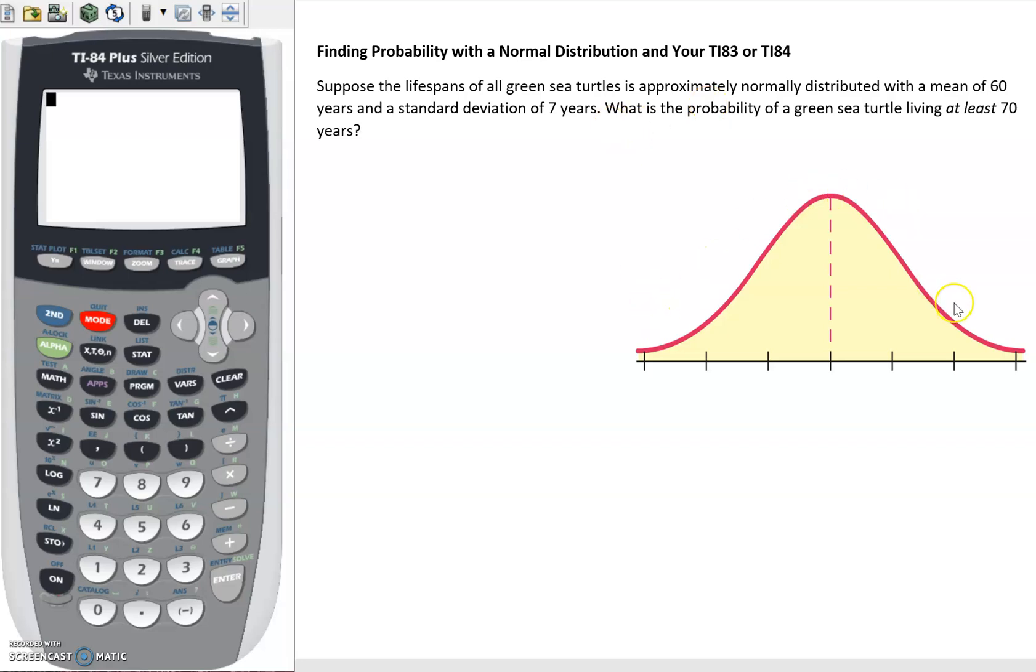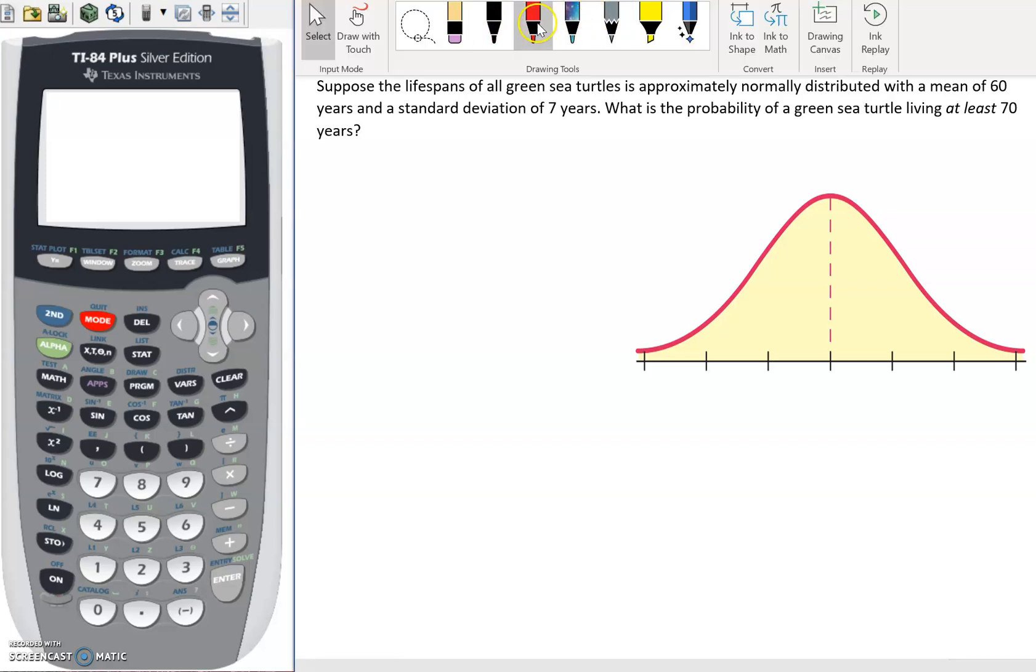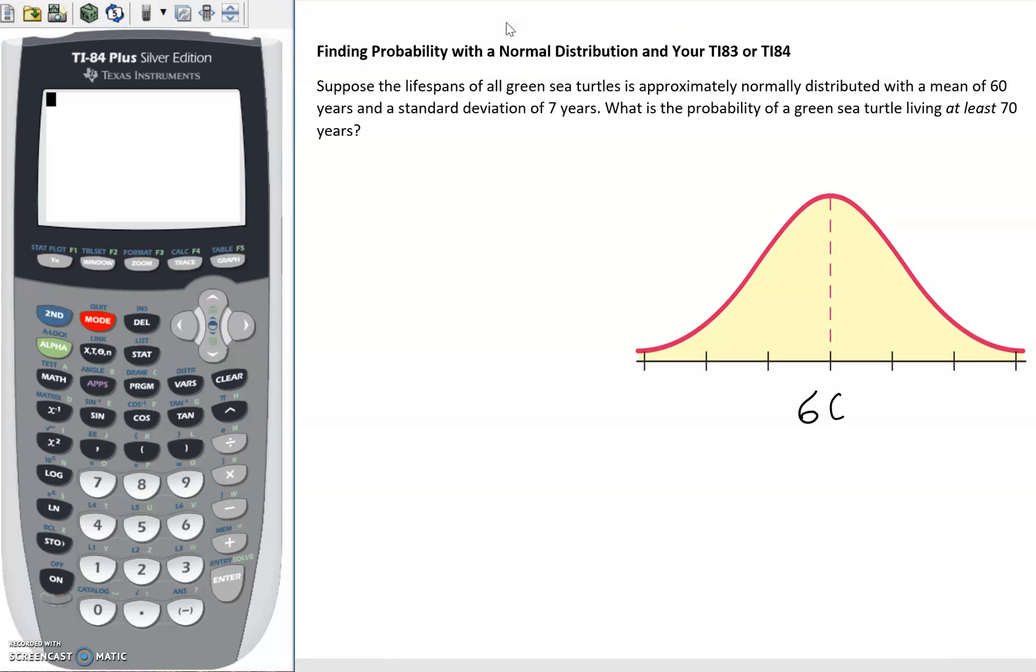We have a generic normal curve here but we can certainly fill in some information on that curve. We've got 60 as our mean, and then each of those marks to the right and to the left should increase by 7 for our standard deviation. So we go up 67, 74 and so on. I'm not going to fill in all of them because this is the region that is most useful for this particular problem.